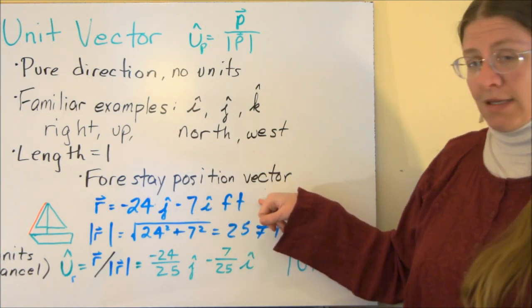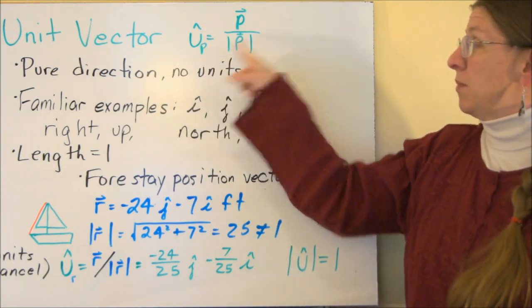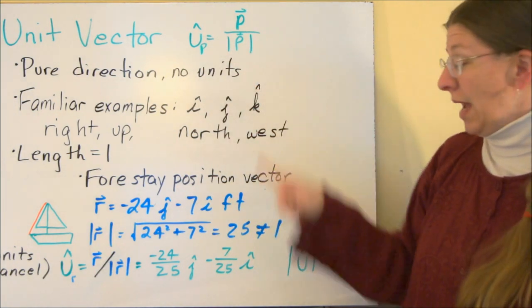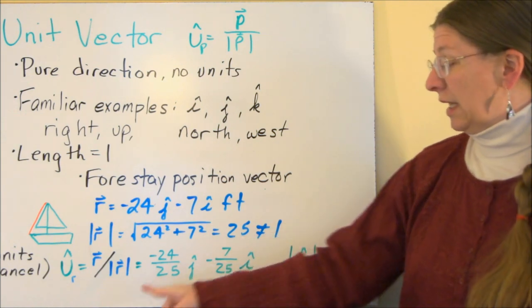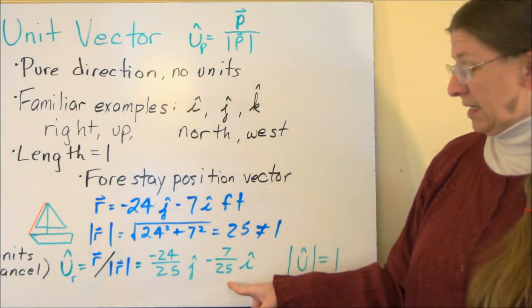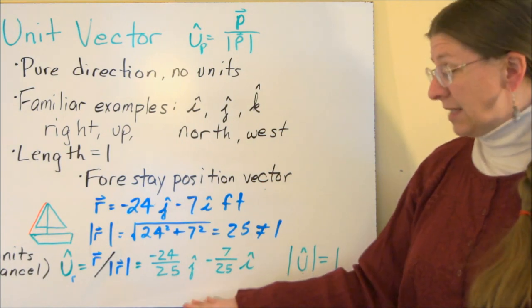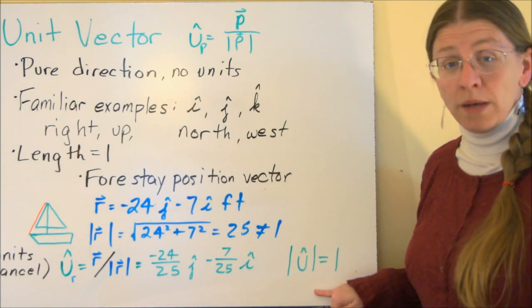But I can normalize this. I can divide it by its own magnitude. That's what this means. Take the position vector and divide it by its own magnitude. Now the magnitude will also have units of feet. So your feet are going to cancel, and I'll have minus 24/25ths j, minus 7/25ths i. That's a unit vector. And if you plug that into the Pythagorean Theorem, you're going to see that it has length 1.